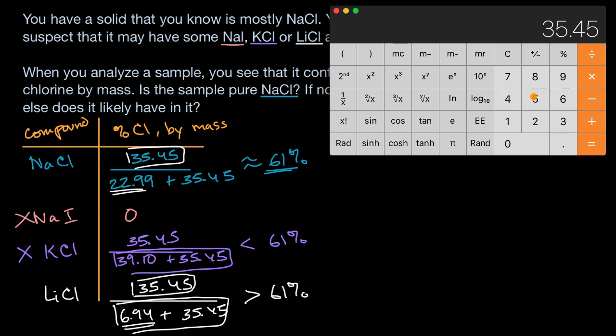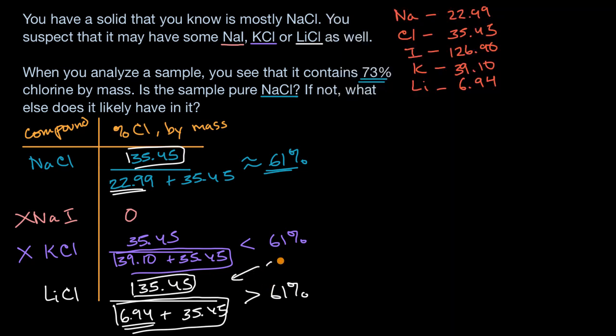We take 35.45 divided by, open parentheses, 6.94 plus 35.45, close parentheses, is equal to—it's roughly 84% chlorine by mass. So this thing is approximately 84% chlorine by mass. So that does the trick. If you had some lithium chloride mixed in with your sodium chloride, it would increase the percent chlorine by mass above 61%. And actually, based on these values, based on the 61%, the 84%, and the 73%, you could actually figure out what percent is your sample of sodium chloride and lithium chloride if you assume those are the only two things in it.